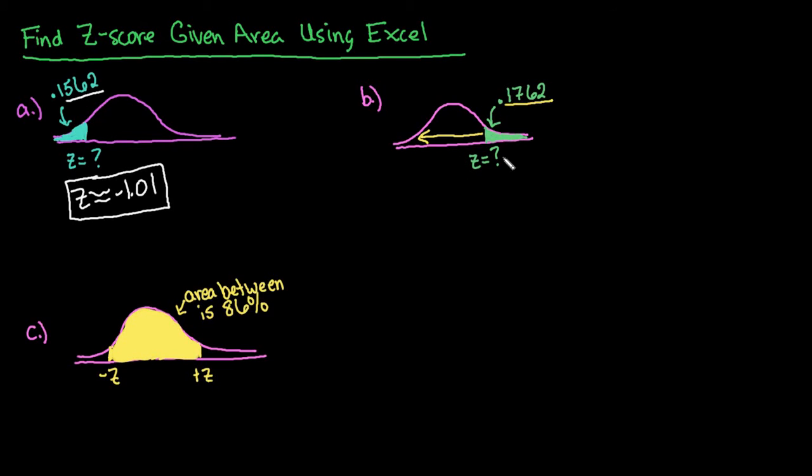But we're obviously looking for a positive z-score because we have only 0.1762 area to the right of this z-score. So what we need to do is we need to find the area to the left